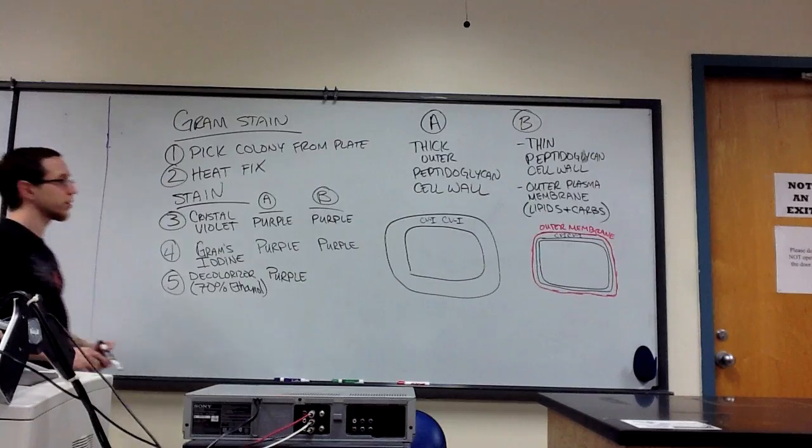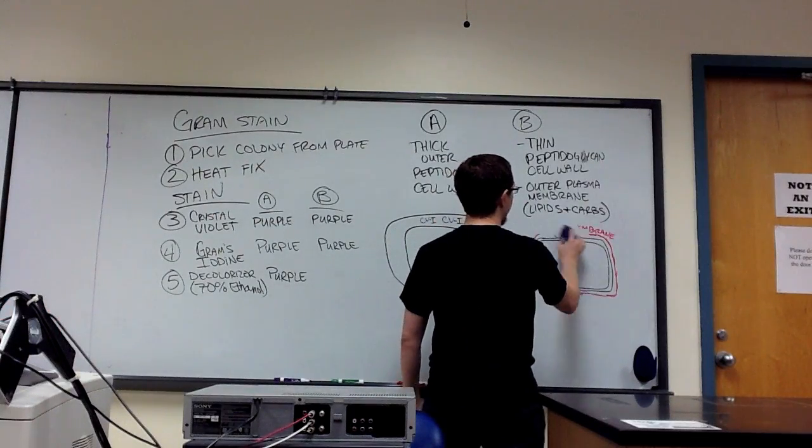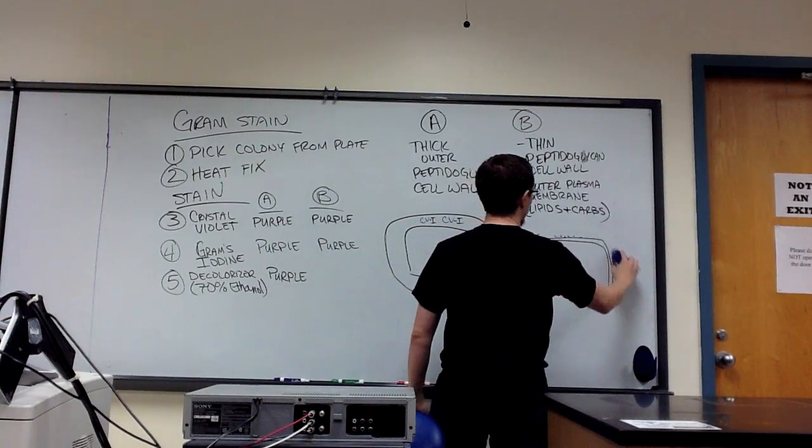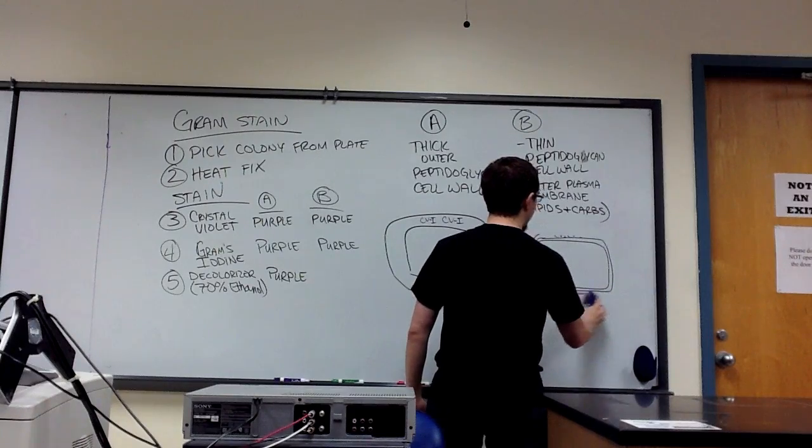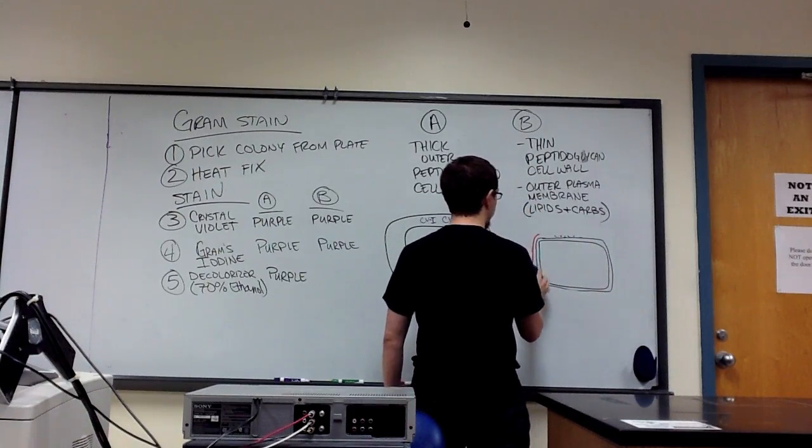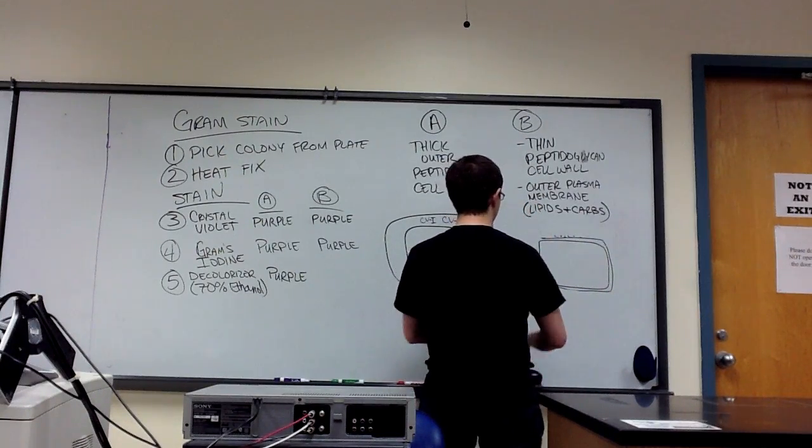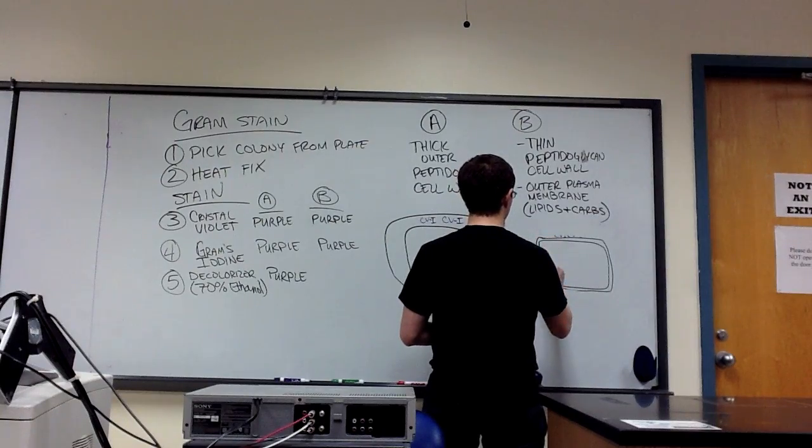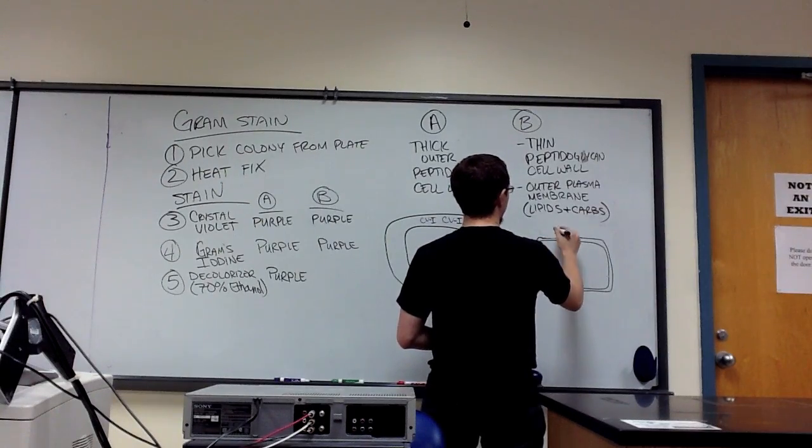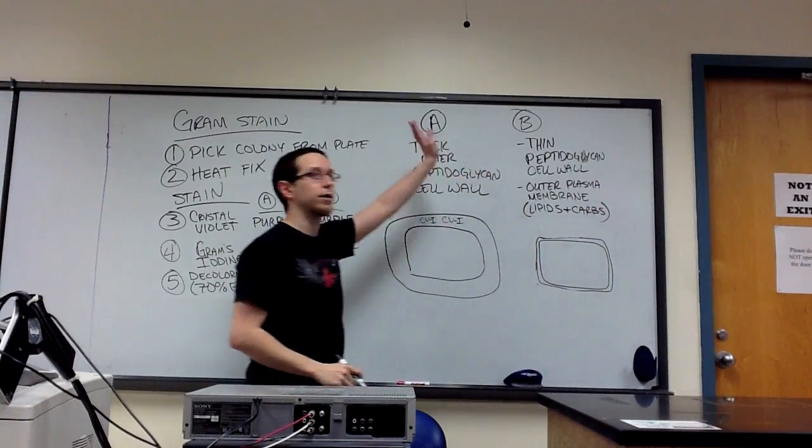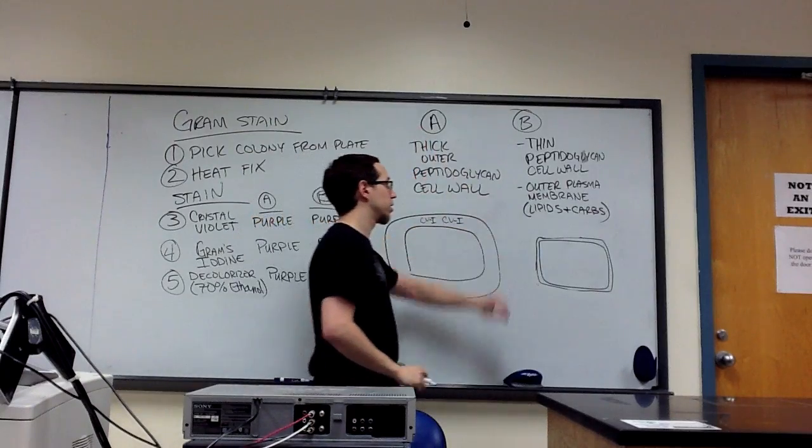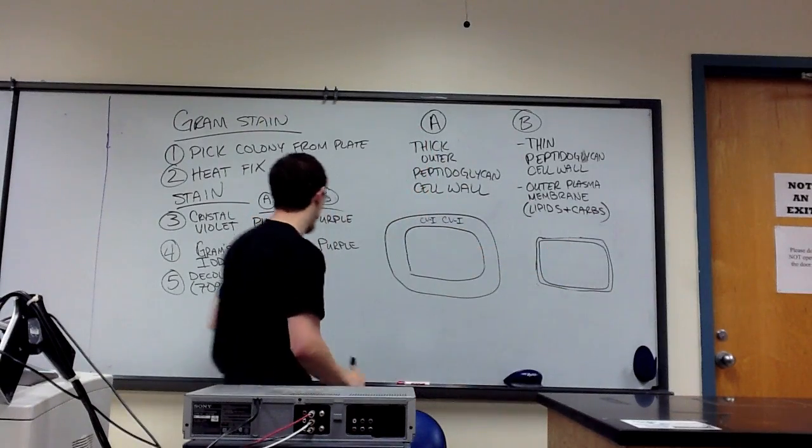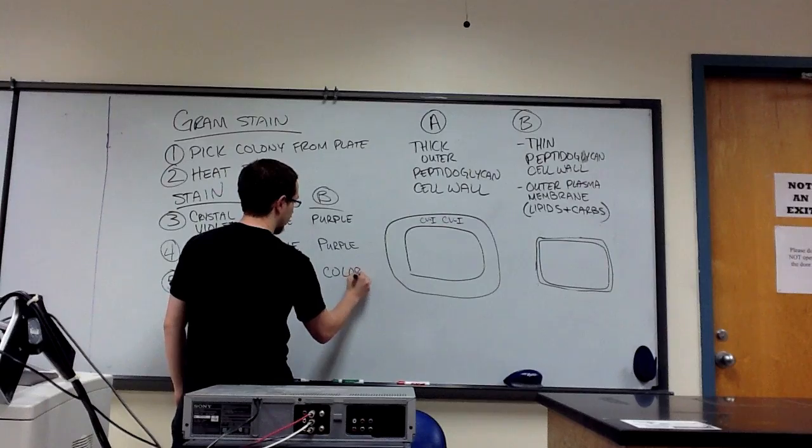However, on this second cell type, the ethanol actually causes that plasma membrane that's on the outside to rupture. And in doing that, it results in the crystal violet-iodine complex being washed away. So right now, this particular cell type is colorless.